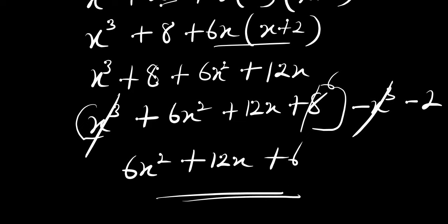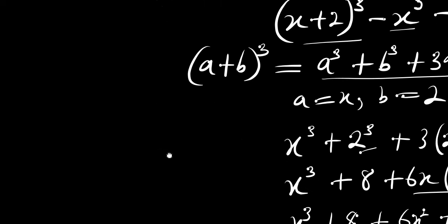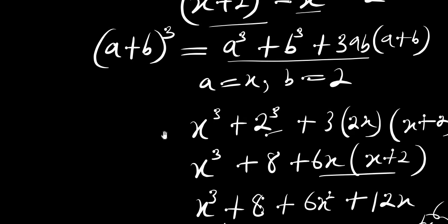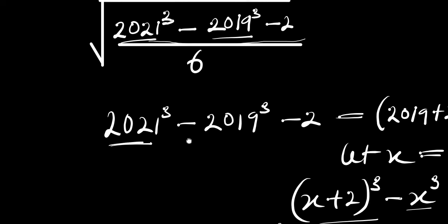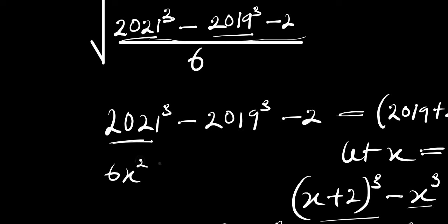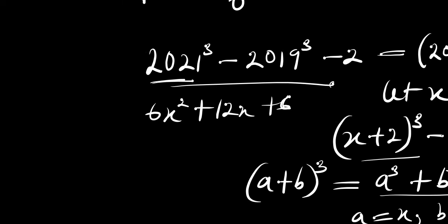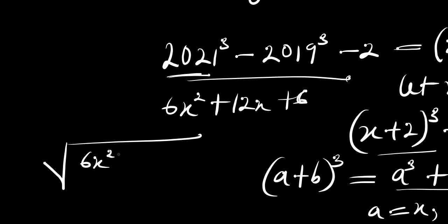Now we copy this as our numerator and transfer it back to the original expression. Our numerator becomes 6x² plus 12x plus 6. So we have the square root of (6x² plus 12x plus 6) divided by 6.